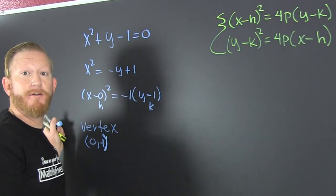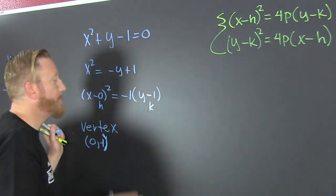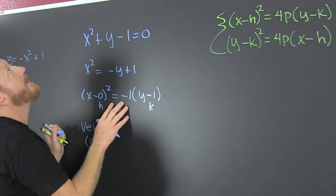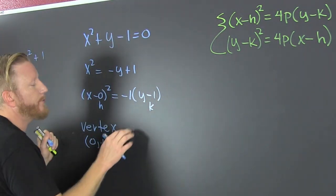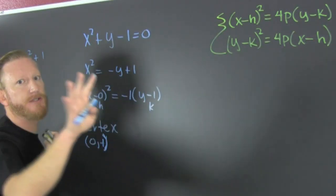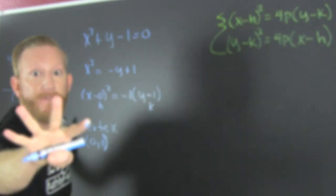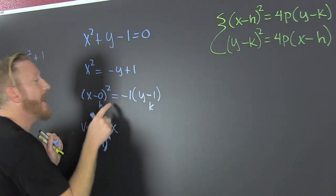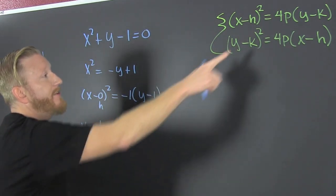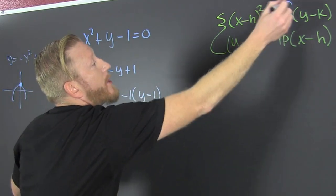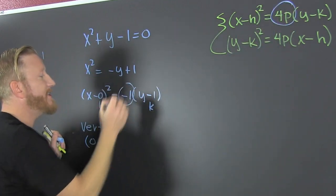So I need to also find my focus and my directrix because the parabola is defined to be the curve equal distance from a point and a line. The point is called the focus. Focus people. Focus. And the line is called the directrix. So first we need to find our p. In order to find our p, we're going to match these guys up.